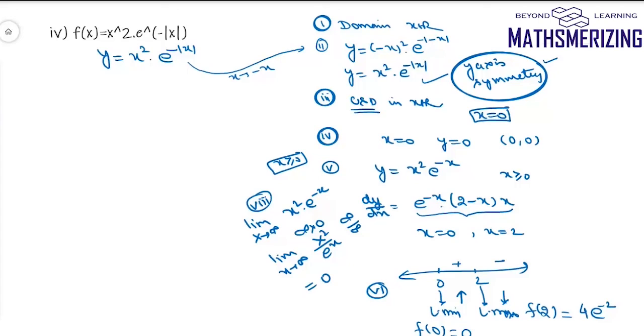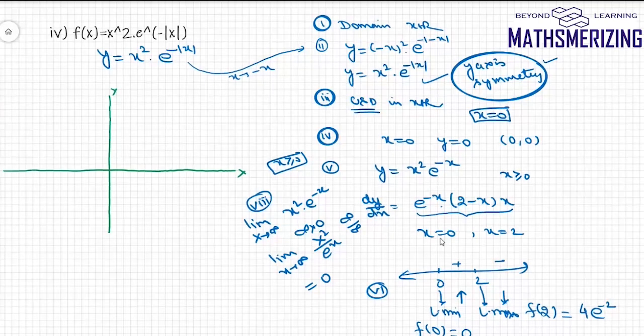So now I'll draw my graph. So it'll intersect x axis and y axis at origin. Local minima at 0, minimum value 0. Then at 2, maximum value 4 upon e square. And then at infinite, it'll be 0. So I'll draw this graph. And now because it is symmetric about y axis, I'll take the reflection of right on left. So that is the graph of y equals x square into e to the power minus mod x.